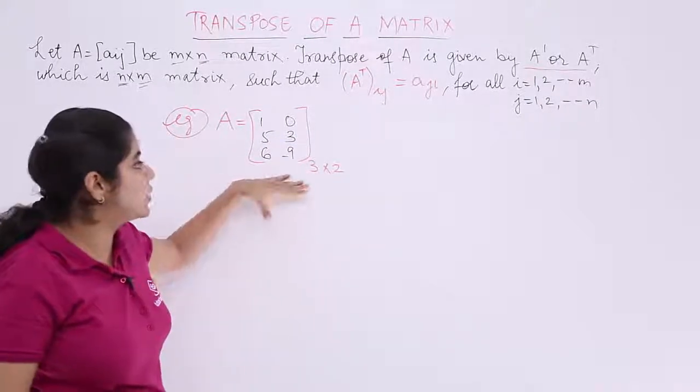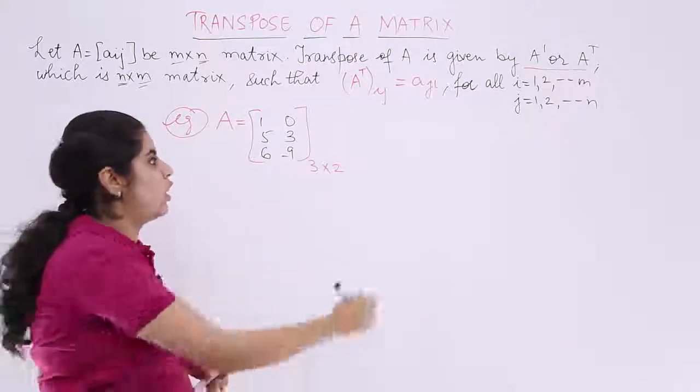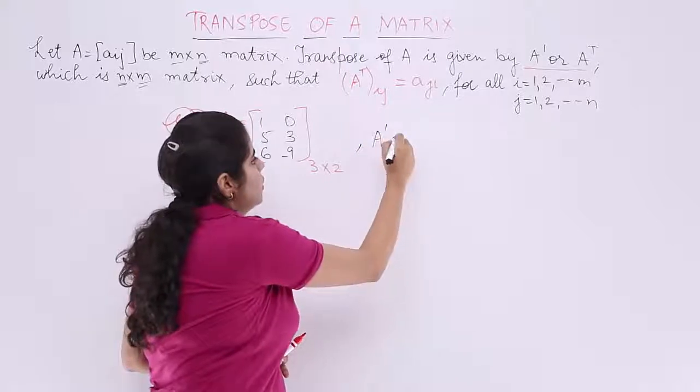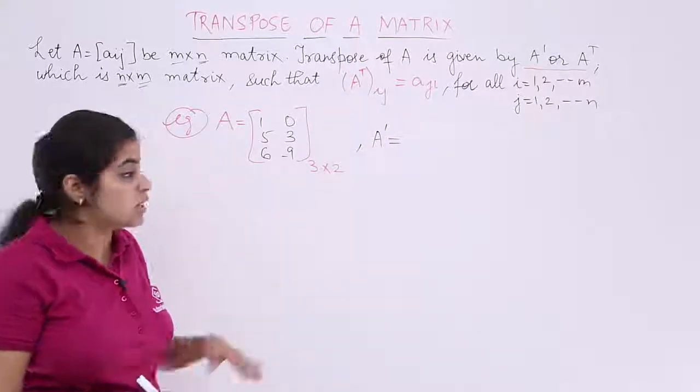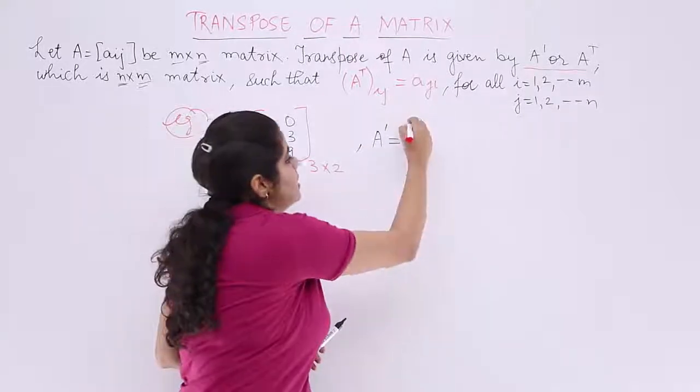This is a given matrix which has 3 rows, 2 columns as you can see. And now you are supposed to find out something called A' or A transpose. You were given the matrix, you were supposed to find the transpose. What is the answer? Let's see.